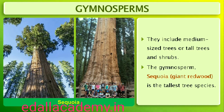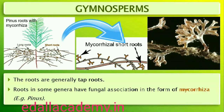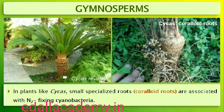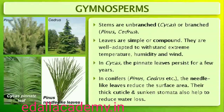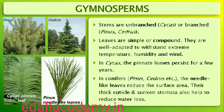The roots are generally tap roots. Roots in some genera have fungal association in the form of mycorrhiza (Pinus), while in some others like Cycas, small specialized roots called coralloid roots are associated with N₂-fixing cyanobacteria. The stems are unbranched (Cycas) or branched (Pinus, Cedrus). The leaves may be simple or compound. In Cycas the pinnate leaves persist for a few years. The leaves in gymnosperms are well adapted to withstand extremes of temperature, humidity and wind. In conifers, the needle-like leaves reduce the surface area, and their thick cuticle and sunken stomata also help to reduce water loss.